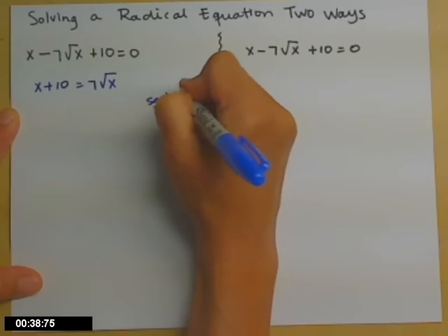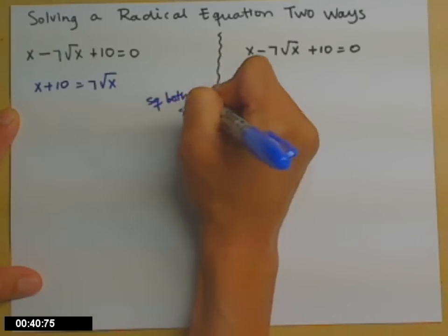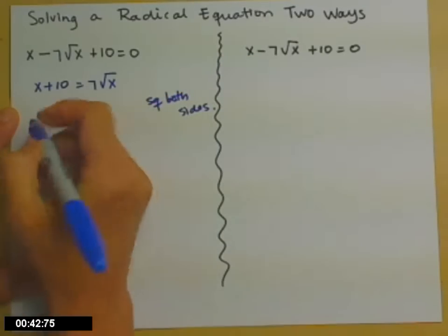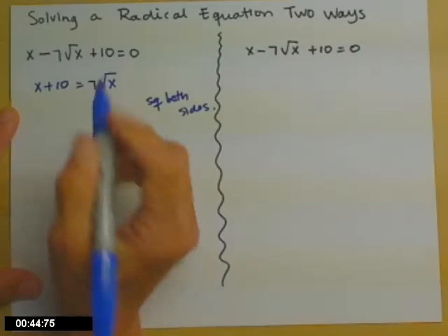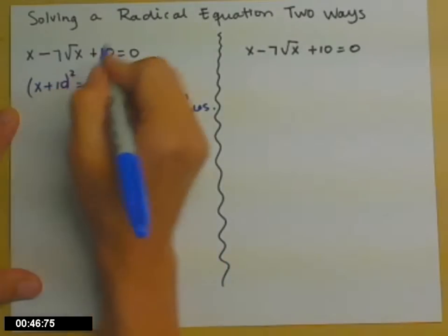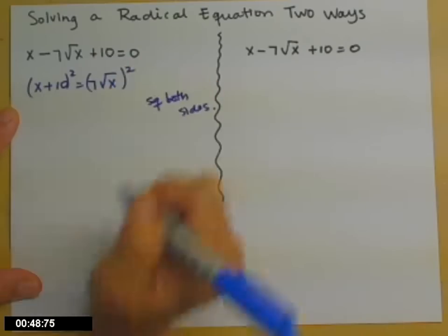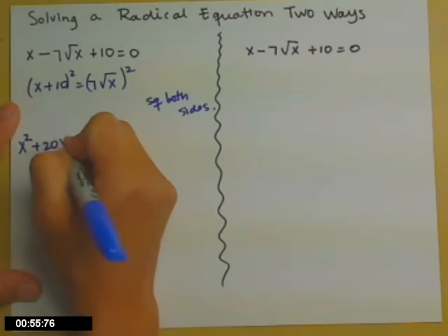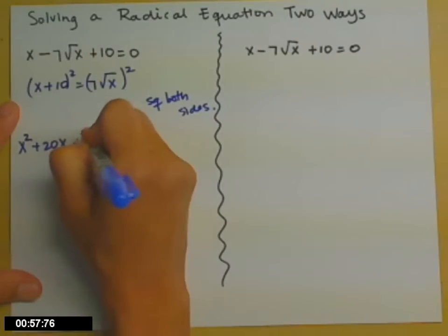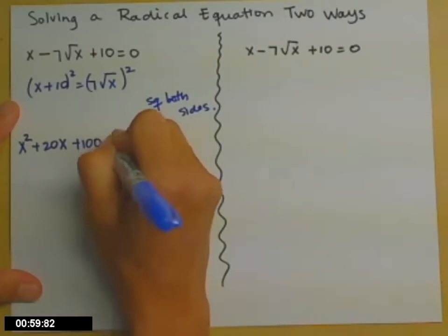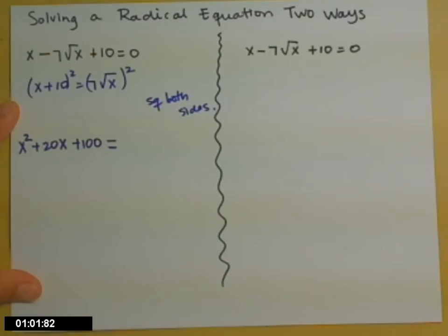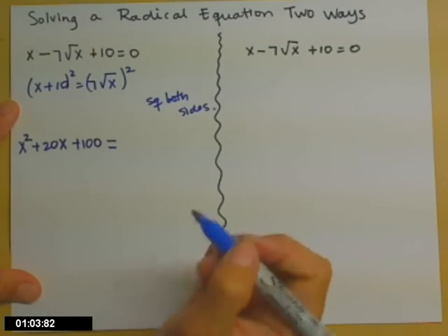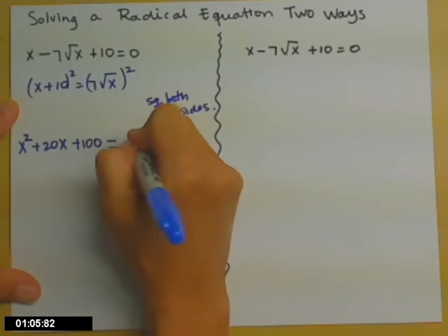And then we square both sides to eliminate the radical. So don't forget that gets parentheses on the left-hand side. And don't forget that middle term or you won't get the right answer. So x squared plus 2 times 10 times x, so plus 20x, plus 100, equals squaring on the right-hand side. You square the 7, you square the radical x, so 49x.